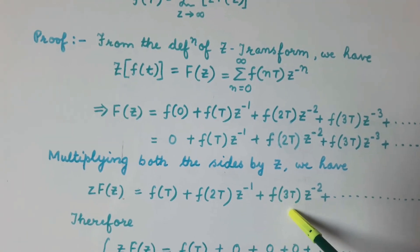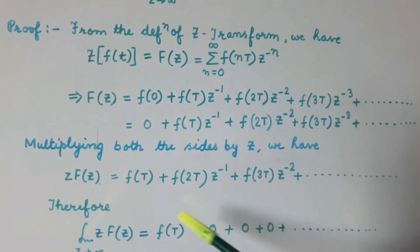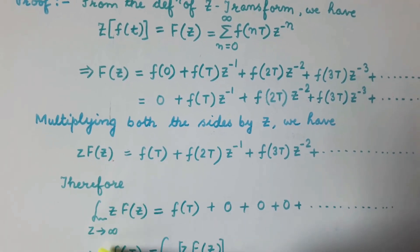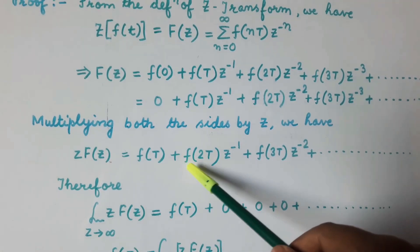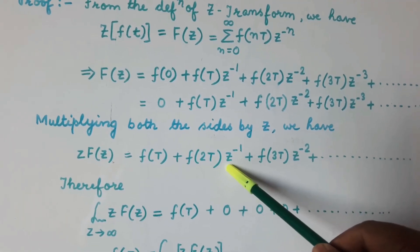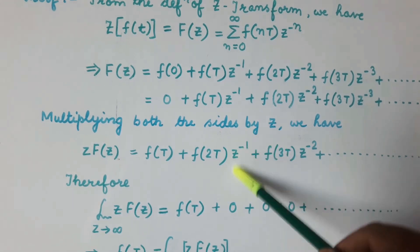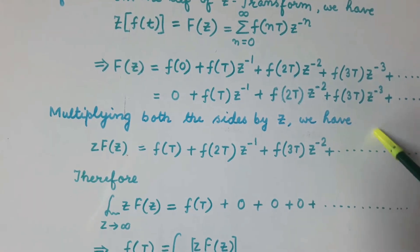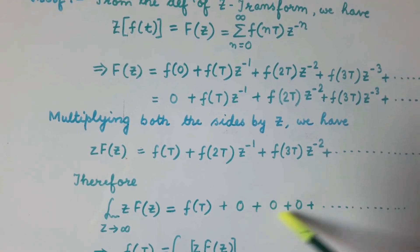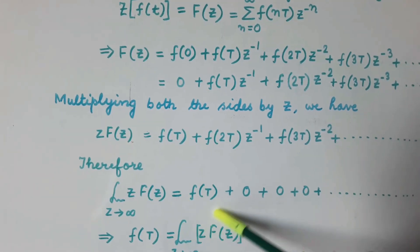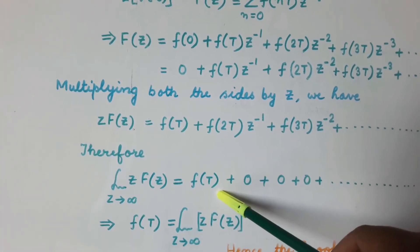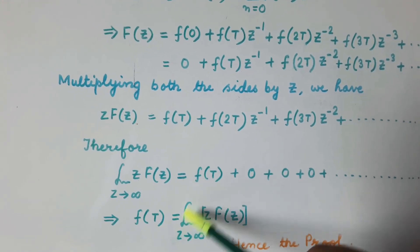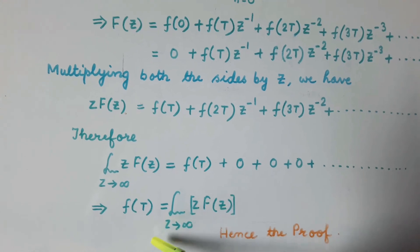Now we take the limit of z·F(z) as z tends to infinity. These remaining terms become 0 because when z tends to infinity, 1 by infinity is 0, 1 by infinity squared is also 0, and 1 by infinity cubed is also 0. So all those terms become 0 and we are left with only the first term. This implies that f(T) is equal to the limit of z·F(z) when z tends to infinity.